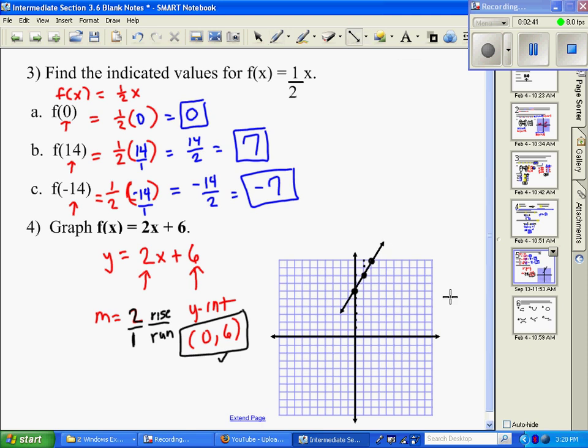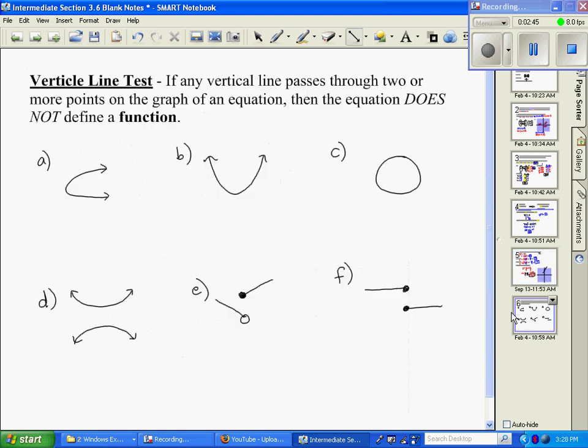So that's graphing using that. And there's a couple different ways to graph, but that's graph using slope-intercept. And our last thing that we're going to talk about, when we said, before we determined if a relation was a function by looking at its x values...